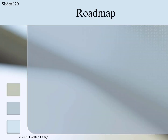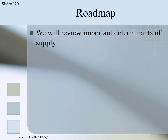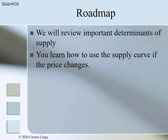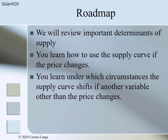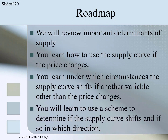What is covered in this segment? First, we will review important determinants of supply. Then you will learn how to use the supply curve if prices change, and under which circumstances the supply curve shifts if another variable other than the price changes. And finally, you will learn how to use the scheme to determine if the supply curve shifts and, if so, in which direction. Please note that these topics are not covered in as much detail as in Module 2 of this chapter. I recommend reviewing Module 4 before viewing this segment.